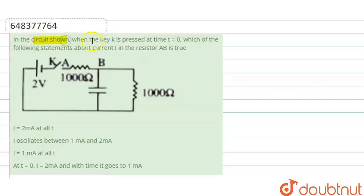In the circuit shown, when the key K is pressed at time t equals 0, which of the following statements about current in resistor AB is true? So here we have given a circuit and we have said that when the key K is closed at time t equals 0, so what will be the correct statement about the current in this resistor AB?